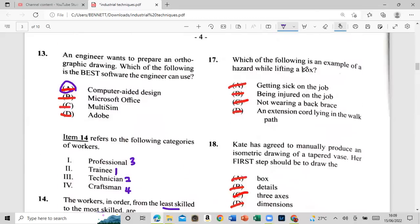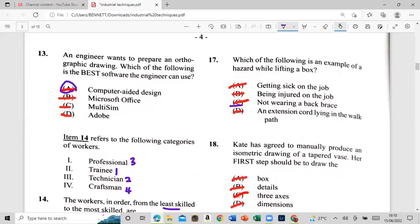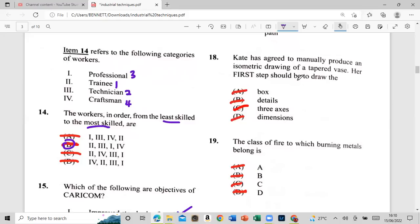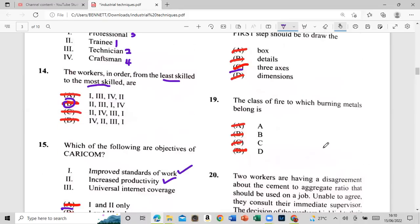17: which of the following is an example of a hazard while if in a box? Get sick on a job, to be injured on the job, not wearing back brace, to foot the an extension, extension card line in the wall. Right, so it's the back brace. Right, so not wearing a back brace. Number 18: Kate has agreed to manually produce an isometric drawing of a tempered base. First, our first step should be to draw, is it the box, the DJ, the three axes, or the dimension? The three axes. All right. Number 19: the class of fire to which burning metal belong is, is it A, D, C, or D? And it's D for D because of C6 the iron is sometimes two workers are having a disagreement. No, no, no, no, no.